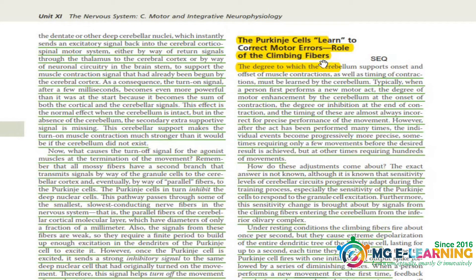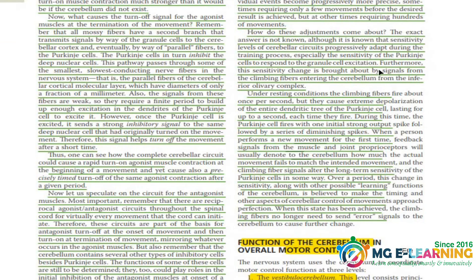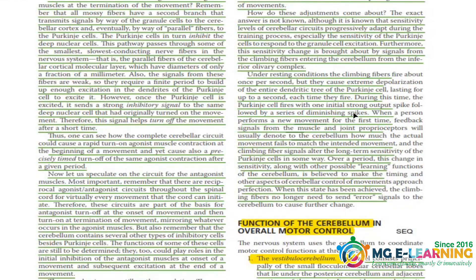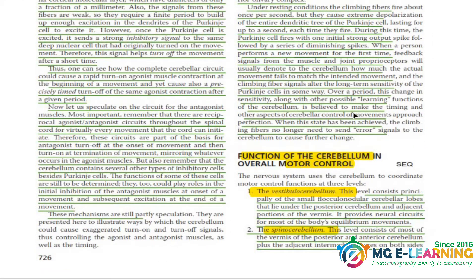Next is the Purkinje cell and the role of climbing fibers — this is also a potential SEQ and is an important topic. You have to read it and make the simplest points for your paper. Next is the function of the cerebellum in overall motor control — this is very very important as a SEQ.